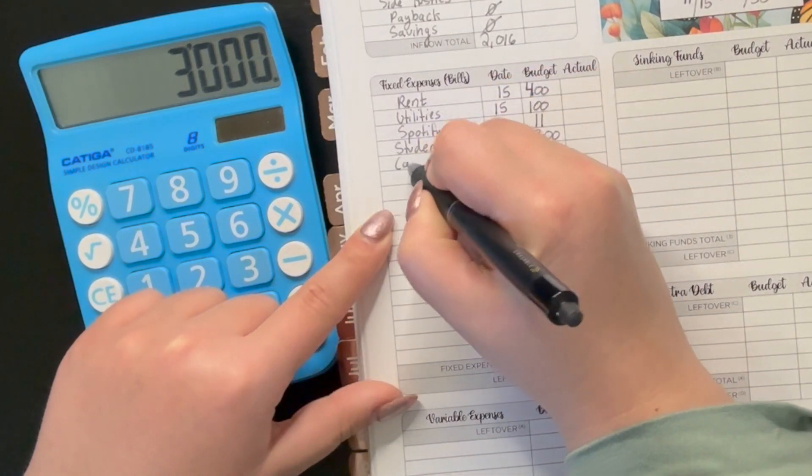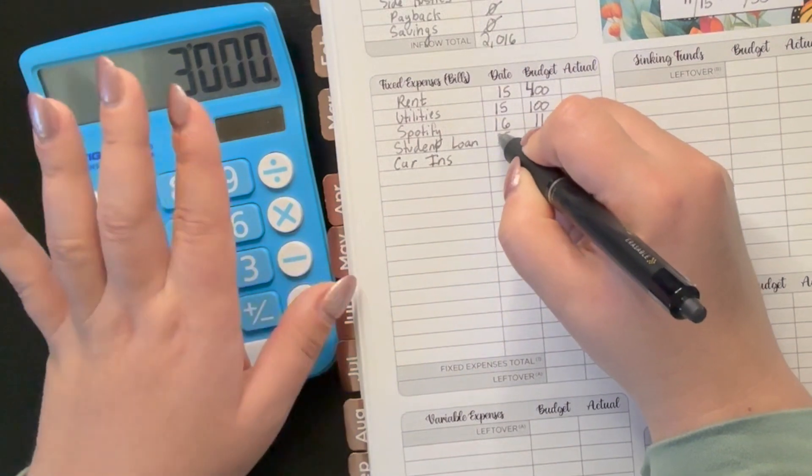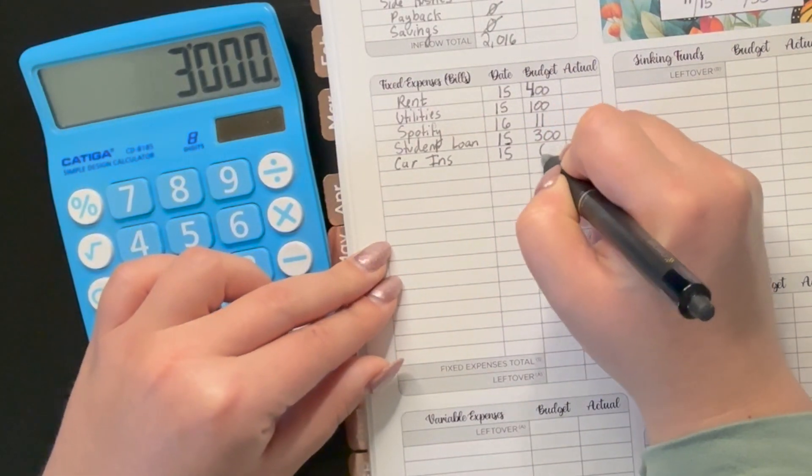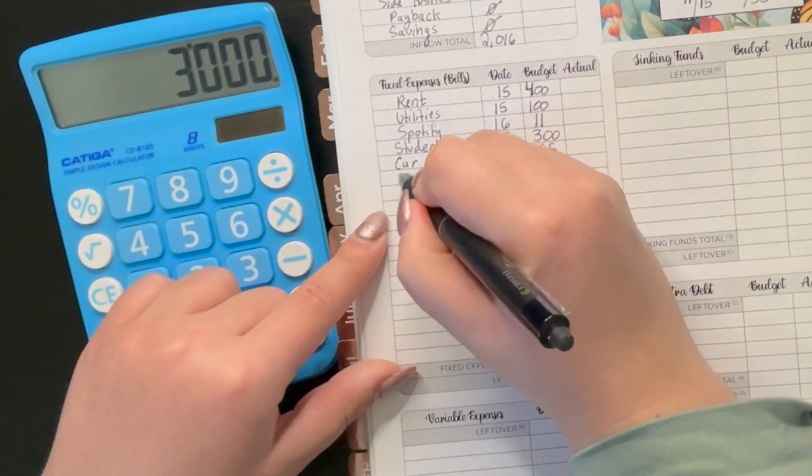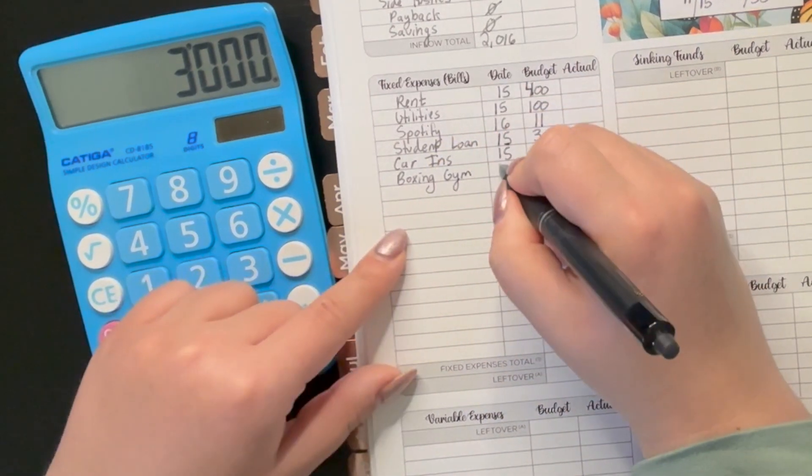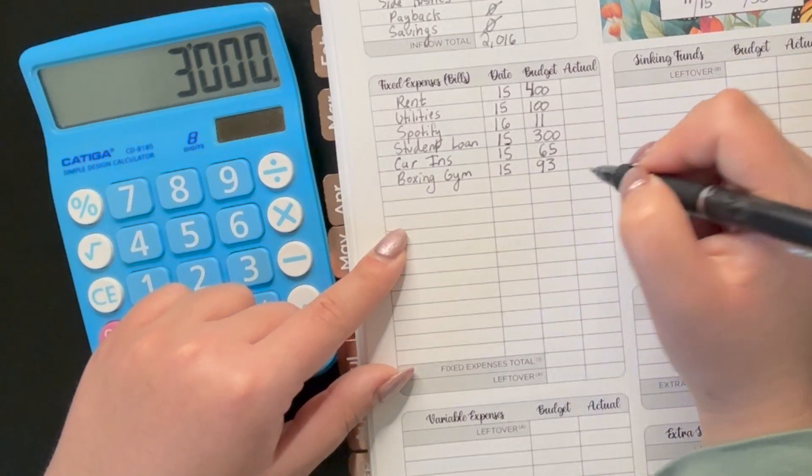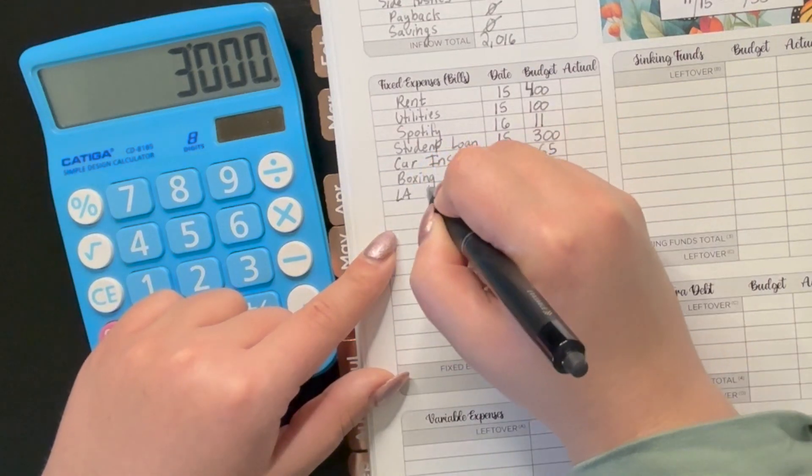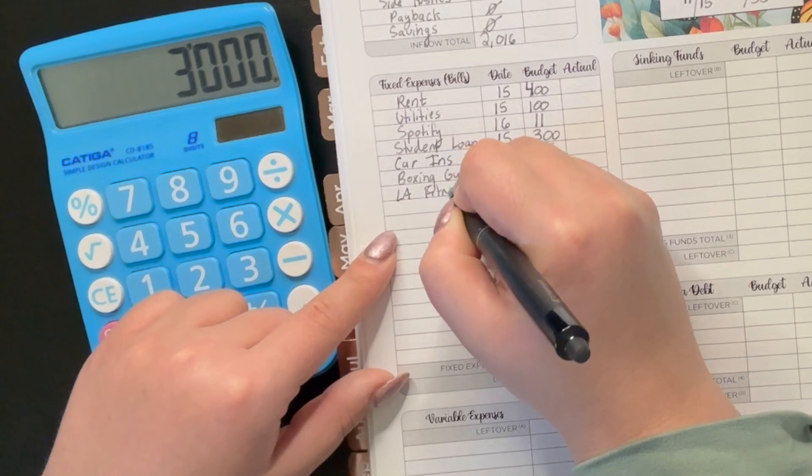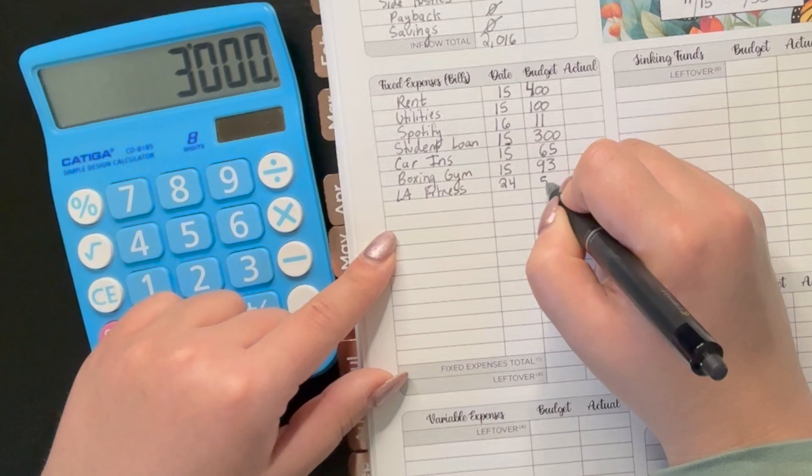Then we have car insurance, which I also pay for in half. I just put this in a savings account. So that's $65. And then we have boxing gym, which I am going to be reducing my membership here. But I save for this in half and that's $93 because it's just insane to be paying that every two weeks. LA fitness, which is my actual gym membership, which is due on the 24th is $50.